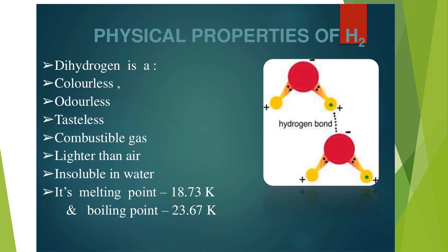Physical properties of hydrogen: Dihydrogen is colorless, odorless, tasteless, combustible gas, lighter than air and insoluble in water. Its melting point is 18.73 Kelvin and boiling point is 23.67 Kelvin.